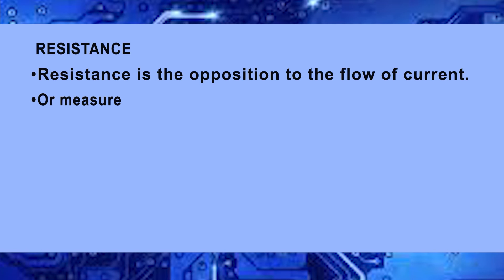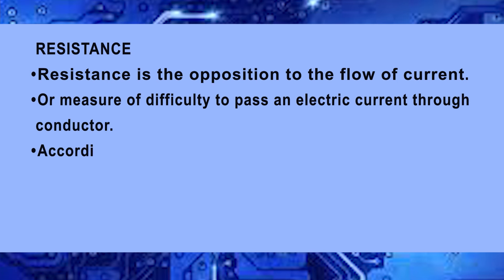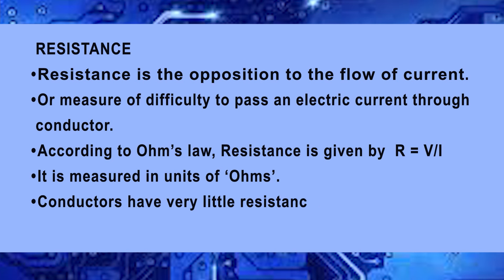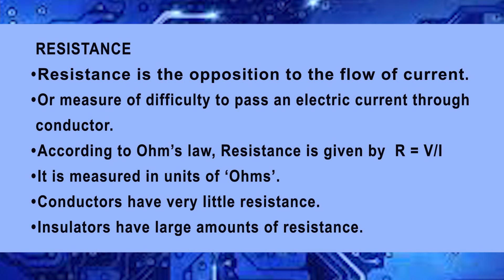Resistance is the opposition to the flow of current, or the measure of difficulty to pass an electrical current through a conductor. According to Ohm's law, resistance is given by R = V / I, that is, resistance is equal to voltage divided by current. It is measured in units of Ohms. Conductors have very little resistance and insulators have a large amount of resistance.